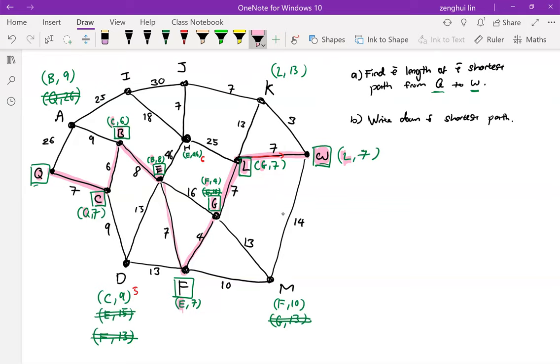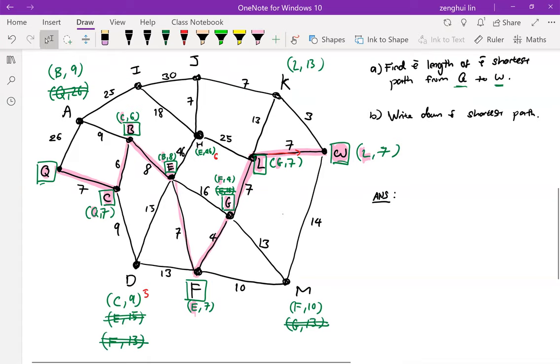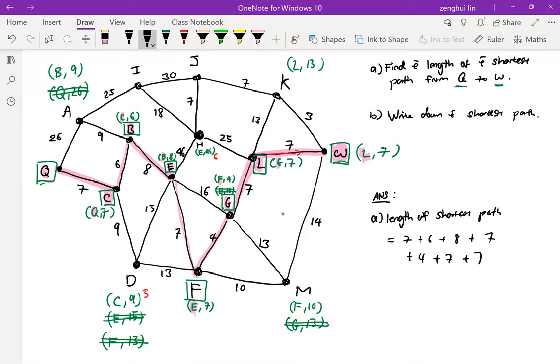So to calculate the length of the shortest path. Length of the shortest path equals to 7 plus 6 plus 8 plus 4 plus 7 plus 7 plus 7 plus 7. That gives us 46.